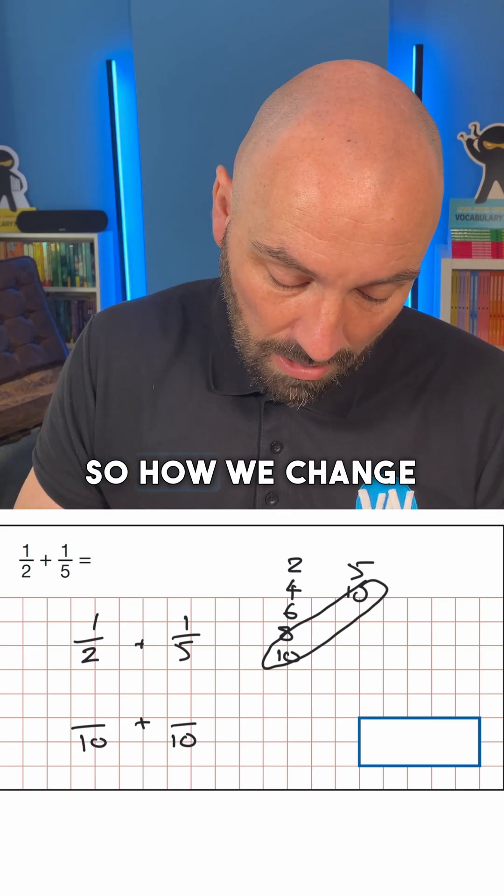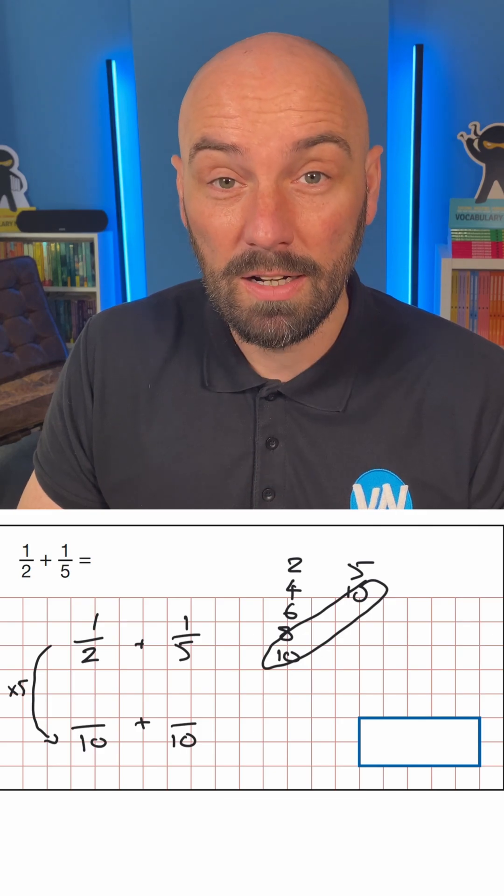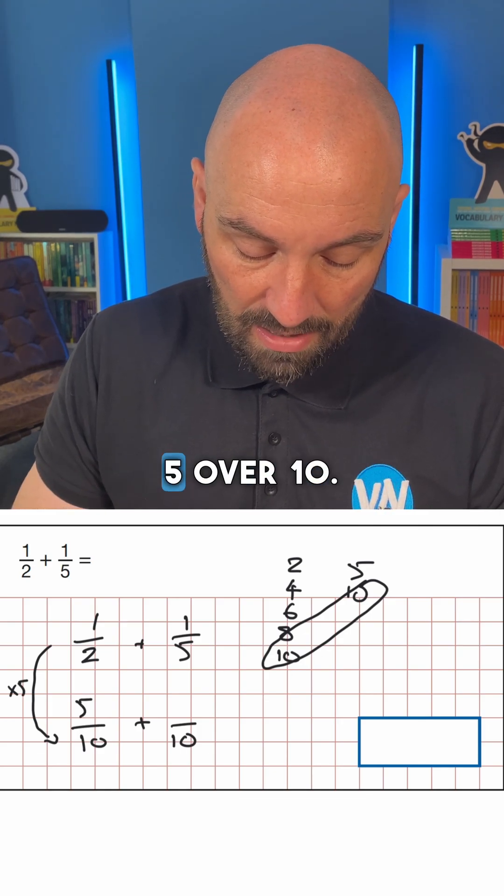So how have we changed 2 to 10? Well we've multiplied by 5, so we would multiply the numerator by 5. So that becomes 5 over 10.